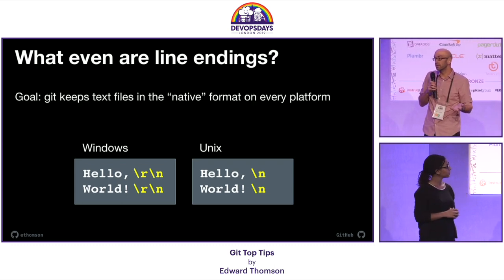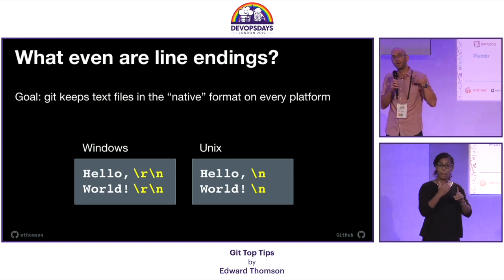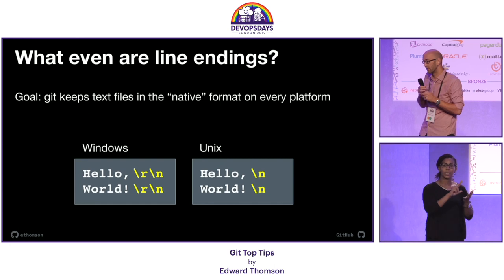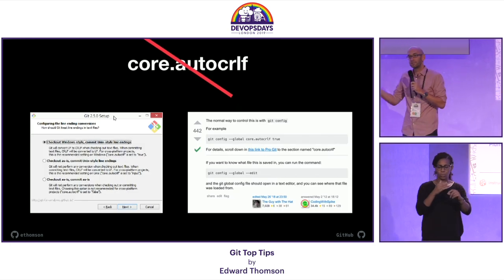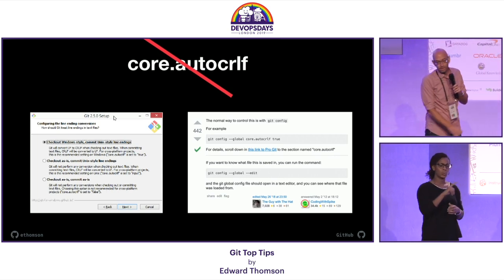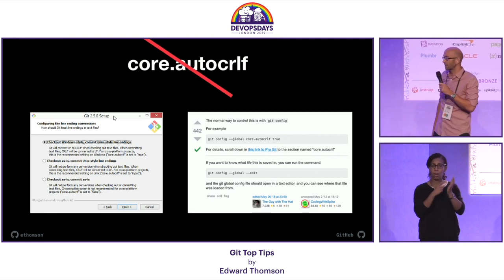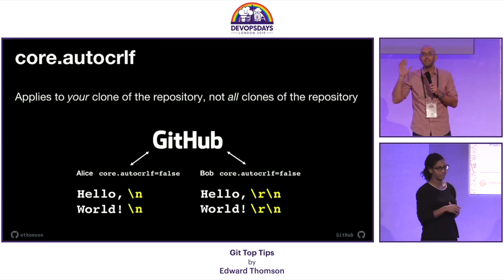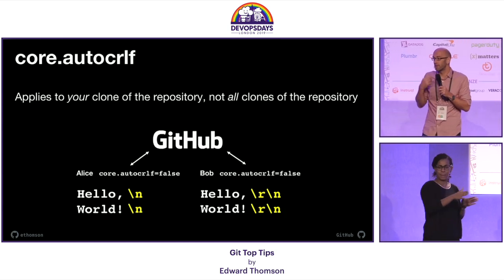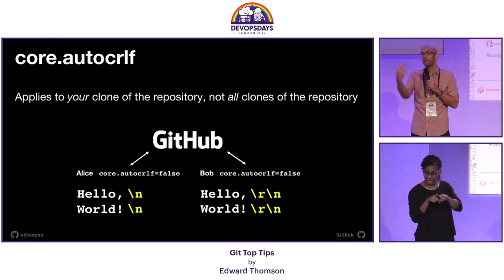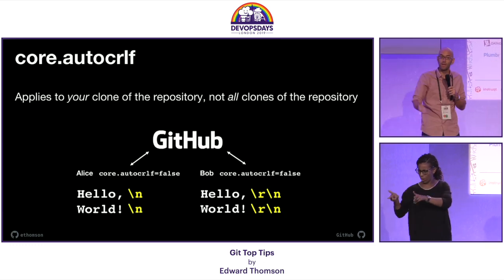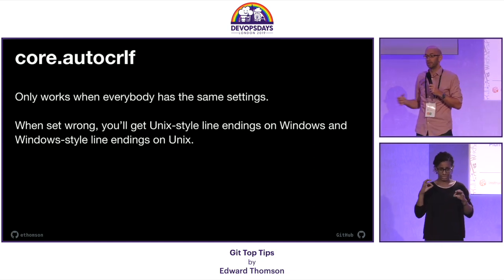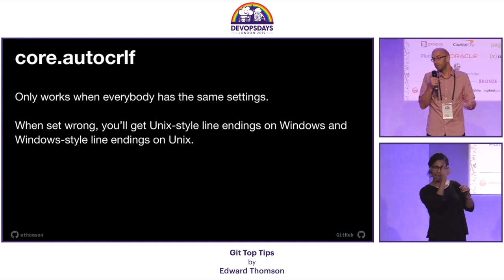Our goal is to have Git handle this for us so that if I'm editing a file on a Windows machine I get Windows line endings, and if a colleague edits a file on a Unix machine they get Unix line endings. But there are tricky ways to get there. A lot of people will tell you to use core.auto.crlf — you'll see this in the Git for Windows installer, you'll see this on Stack Overflow. Don't do it. This is really bad advice. The problem with core.auto.crlf is that everybody sets it independently. So if you and I are working in the same repository and I set my core.auto.crlf one way and you set it a different way, we're checking files into the repository in different formats. When you have these two settings in disagreement, you get Unix-style line endings on Windows and Windows-style line endings on Unix. It's no good — it's the exact opposite of what you want.